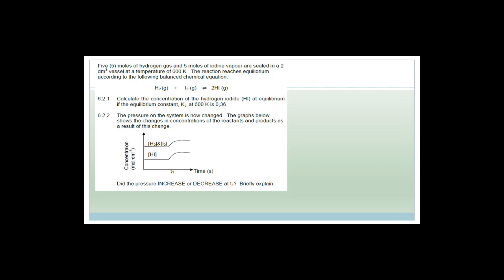Okay, so if you read this, you can see it says five moles of hydrogen gas and five moles of iodine vapor are sealed in a two decimeter cube container at a temperature of 600 Kelvin. The reaction reaches equilibrium according to the following balanced reaction: H2 plus I2 gives you 2HI. Calculate the concentration of the hydrogen iodide at equilibrium if the equilibrium constant Kc at 600 Kelvin is 0.36.